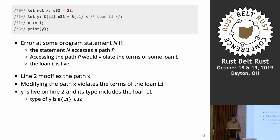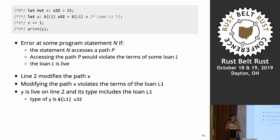Comparing to what was happening before Polonius: before, when figuring out references, we figured out their lifetimes by looking forward — not in relation to a particular error. We were computing in general where might this reference get used, what set of lines in the future. Then later, when we have a potential error location, we compared it against that set. Whereas now, we compute in general where did everything come from, and then when we have a particular error location, we figure out what might get used here and check if any came from that spot.